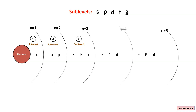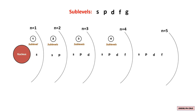In the fourth energy level, there are four sublevels: S, P, D, and F. The F sublevel is also present in the fifth energy level. In the fifth energy level, there are five sublevels: S, P, D, F, and G.